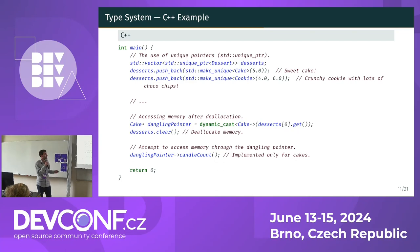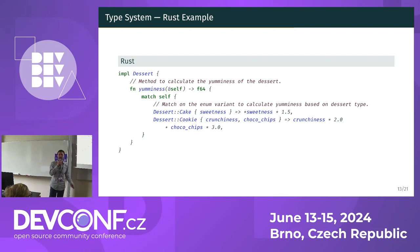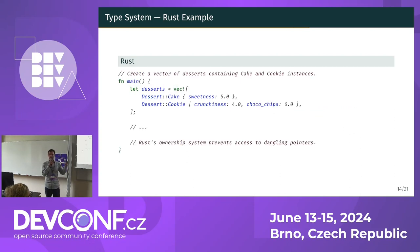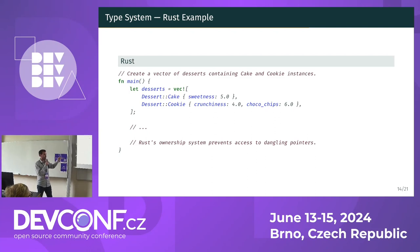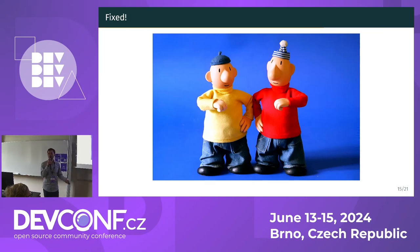But what about Rust? Rust uses enums to represent the different desserts, ensuring all cases are handled explicitly. The type system guarantees that all variants are considered, preventing runtime type mismatches. Pattern matching with the match statement allows for concise and clear handling of different dessert types. It ensures all possible cases are covered at compile time, leading to safer and more maintainable code. In the main function, we create a vector of desserts containing cake and cookie, including parameter settings. If we try to access memory through a dangling pointer, it is not possible because Rust's ownership system prevents accessing dangling pointers. We have fixed the first two C++ problems so far and we have one last code sample to go.